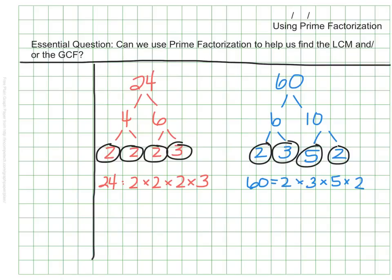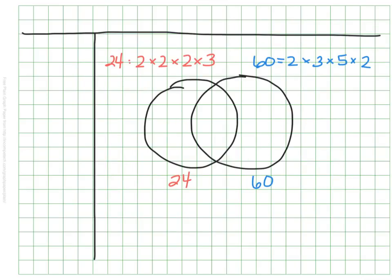How'd you do? I have both of my prime factorizations listed below my factor trees. I'm going to now use a Venn diagram to show some of this information. I want to look at the prime factors that both of these numbers have, and I'm going to organize them in my Venn diagram.